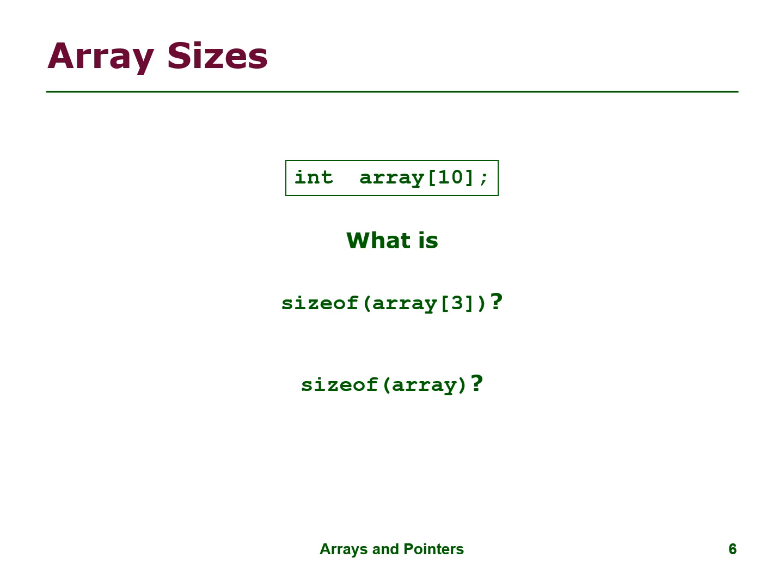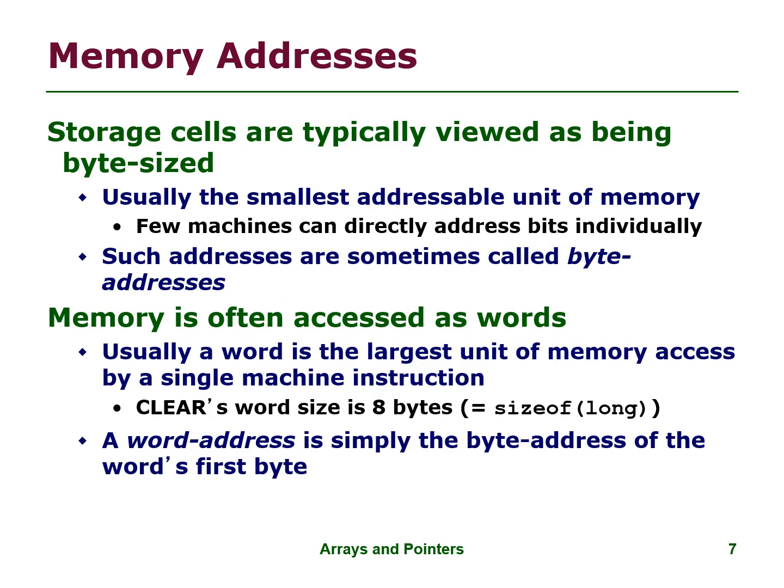Array sizes. Memory addresses: storage cells are typically viewed as being byte-sized, usually the smallest addressable unit of memory. Few machines can directly address bytes unusually; such addresses are sometimes called byte addresses. Memory is often accessed as words. Usually a word is the largest unit of memory accessed by a single machine instruction. In x86-64, word size is eight bytes.